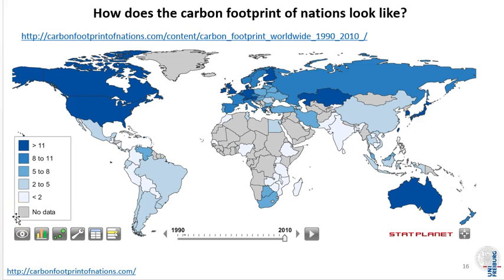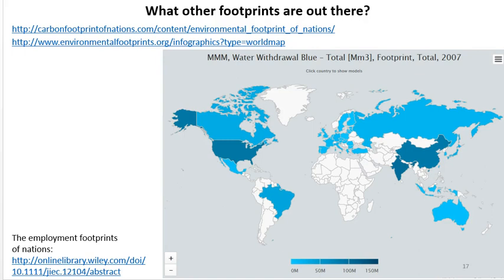We can apply multi-regional input-output analysis to calculating footprints of consumption across the world — a quite famous application. For example, we can calculate the carbon footprints of total final consumption in different countries and illustrate how much carbon is embodied in the supply chains of the commodities consumed. The same footprint logic applies to other extensions, such as the water footprint, social footprints like labor and employment, and a wide array of other footprints including material and land.